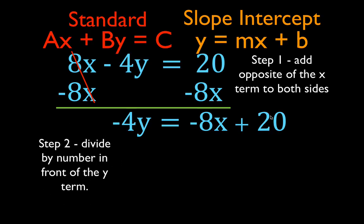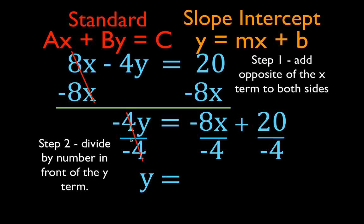We are going to do the second step now. The second step is simply to divide by the number that is in front of the y. The number in front of the y is minus 4, so I am going to divide each term — the whole equation — by minus 4. Minus 4y divided by minus 4: the minus 4 cancels, you are left with y. Minus 8x divided by minus 4 is 2x — 8 divided by 4 is 2, and a negative divided by a negative is a positive. 20 divided by minus 4 is minus 5.